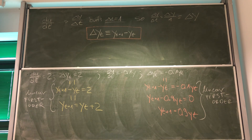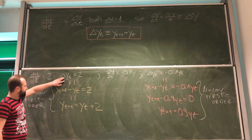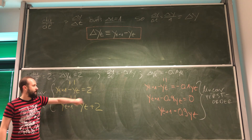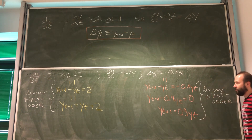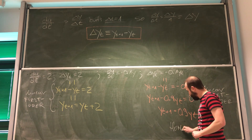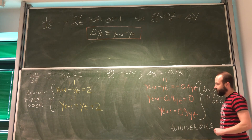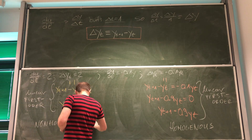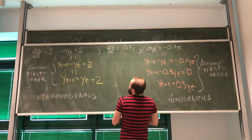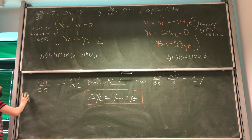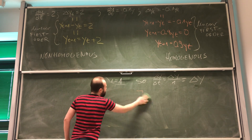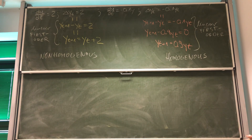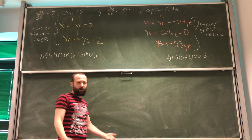There is one thing that distinguishes these two equations quite significantly. In the first equation, after collecting all y terms, we have a constant on the right. In the second, we have zero. This means the first equation is non-homogeneous and the second is homogeneous. Now we know how these equations look. The second thing is to learn how to solve them, and there are different ways we can do that.